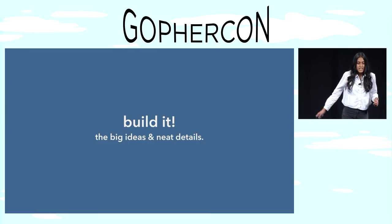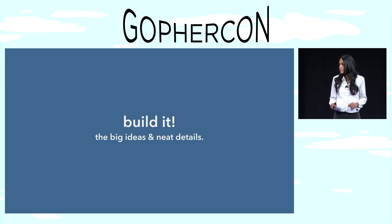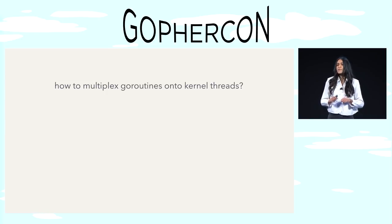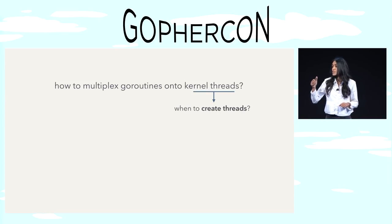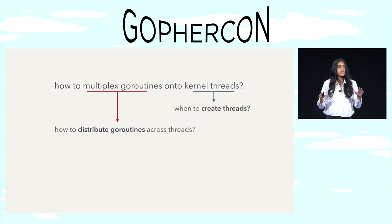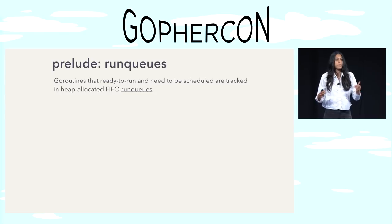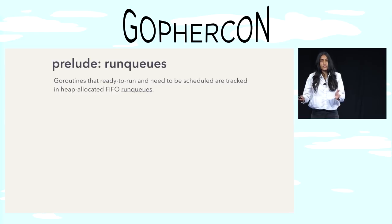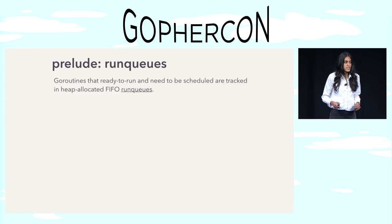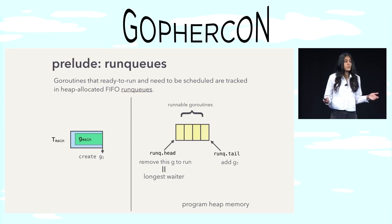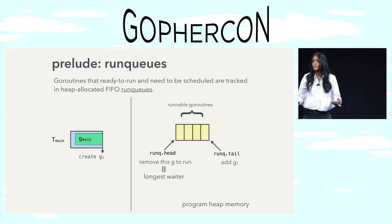Now that we're done with the why, the when, and the what, let's get building. Our question for today is: how do we go about multiplexing these Go routines onto kernel threads? We can tease this apart into two simpler questions: when to create these kernel threads, and how to distribute Go routines across threads. First, we need a way to track the Go routines that need to be run. We're going to use a heap-allocated struct called a run queue — a first-in, first-out queue. When there's a create event, the new Go routine is added to the tail of the queue. When it's time to run a Go routine, you run it from the head of the queue.